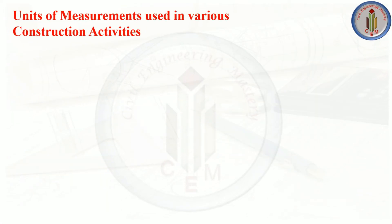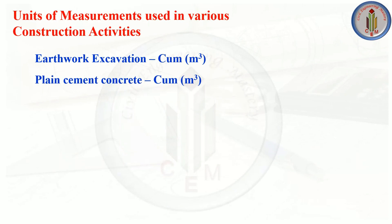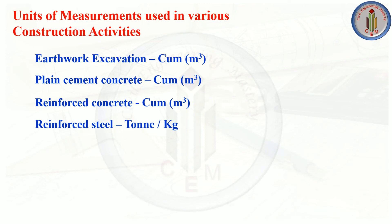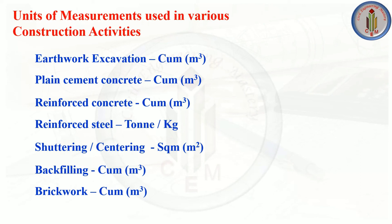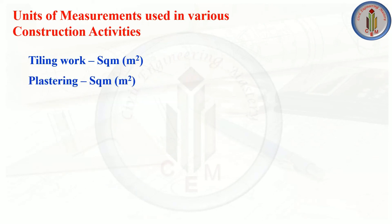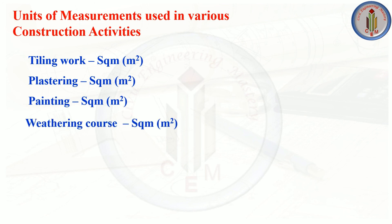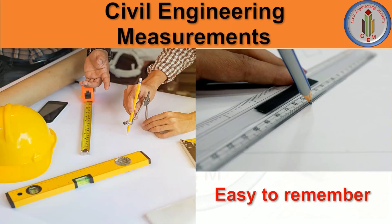Units used in construction activities: earthwork excavation — cubic meters; plain cement concrete (PCC) — cubic meters; reinforced cement concrete (RCC) — cubic meters; reinforced steel — tons or kg; shuttering/sheathing — square meters; backfilling — cubic meters; brickwork — cubic meters; tiling, plastering, painting, weathering course, and waterproofing — all measured in square meters.